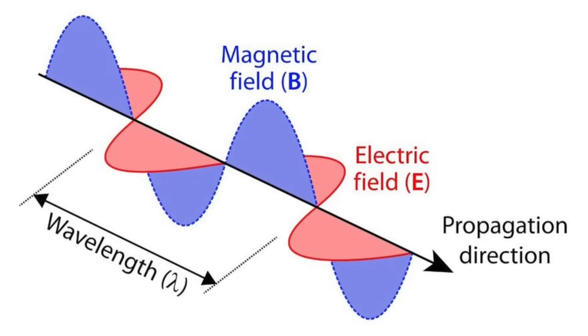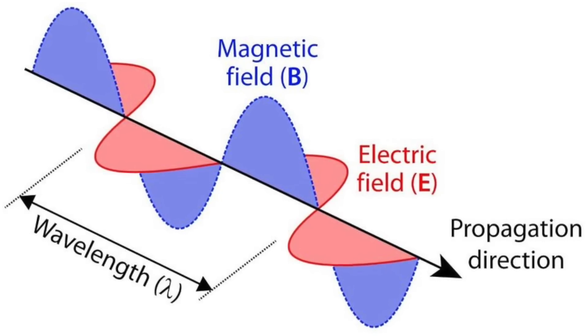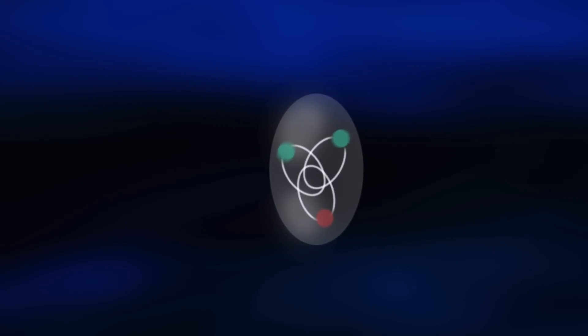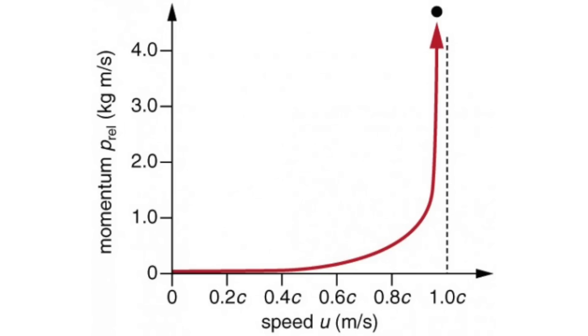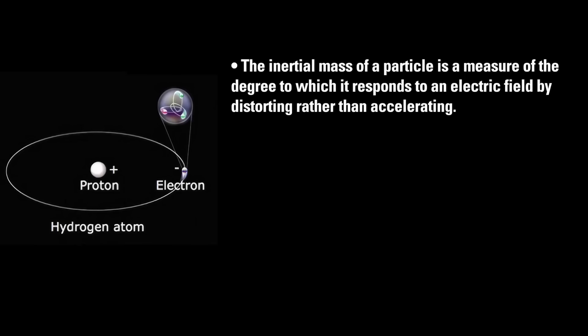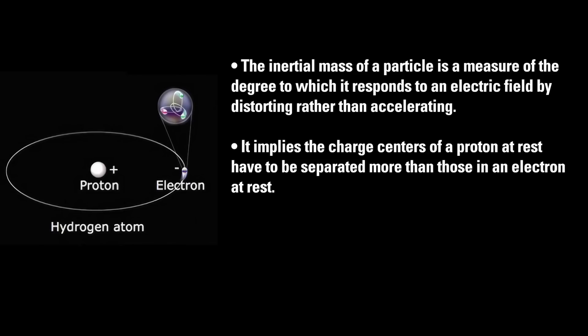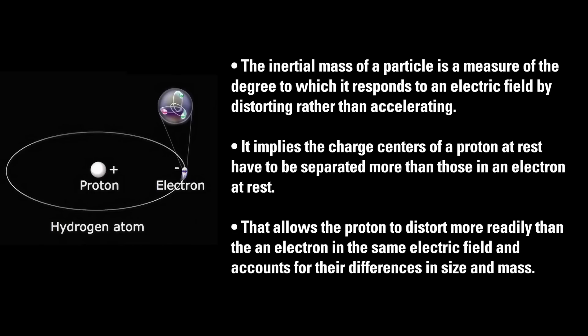The accelerating electromagnetic field will distort the orbits of charges within the electron or proton. The more distorted a particle becomes, the more easily the energy supplied to accelerate the particle is assimilated in further distortion rather than acceleration. Hence the apparent increase in mass. The inertial mass of a particle is a measure of the degree to which it responds to an electric field by distorting rather than accelerating. It implies that the charge centers of a proton at rest have to be separated more than those of an electron at rest.